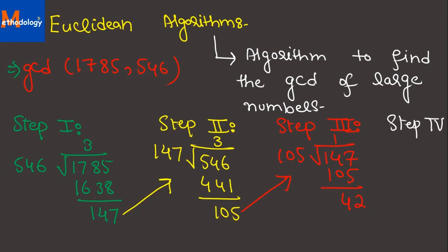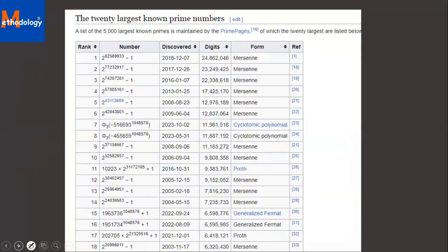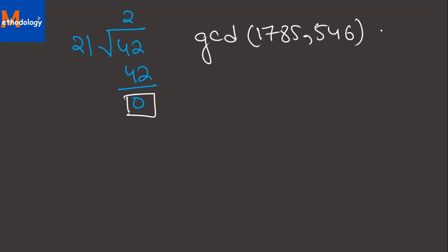Step 4: again, we will divide the divisor of step 3 and remainder, which is 105 and 42, and we get remainder 21. In the next step, we divide 42 by 21 and get remainder 0. So the process stops. This means the GCD of 1785 and 546 is 21.